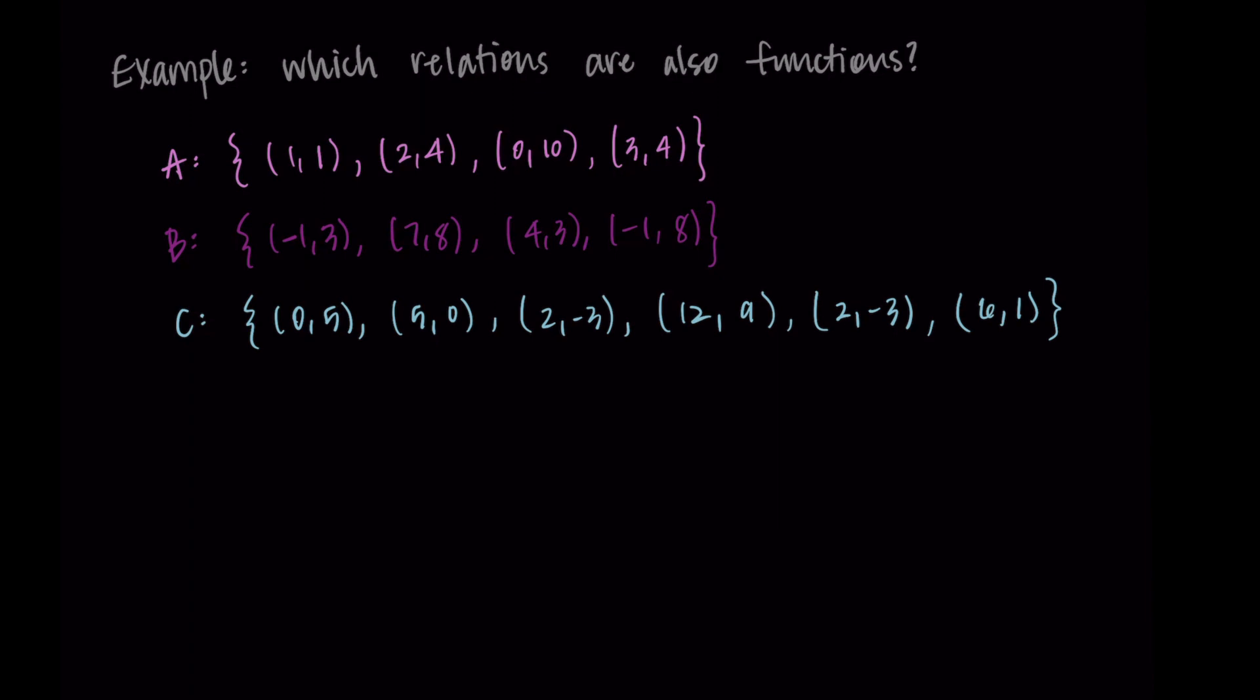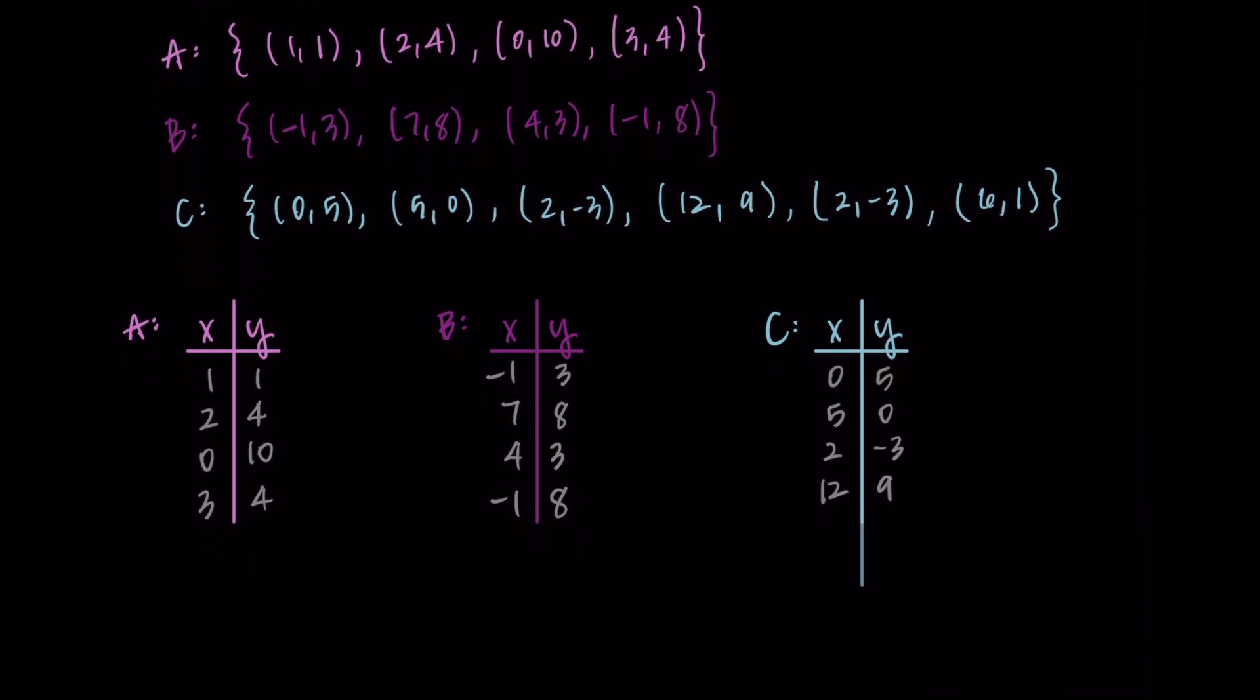These are written as sets right now, and to make it easier I'm going to rewrite them as tables. For A, our ordered pairs are (1,1), (2,4), (0,10), and (3,4). For B: (-1,3), (7,8), (4,3), and (-1,8). For C: (0,5), (5,0), (2,-3), (12,9), (2,-3), and (6,1).